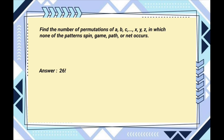We start by counting the number of permutations that contain spin, then subtract the number of permutations that contain gain, path, or net, then add back in the number of permutations that contain two of the forbidden patterns, then subtract those containing three, and finally add back those containing all four forbidden patterns.